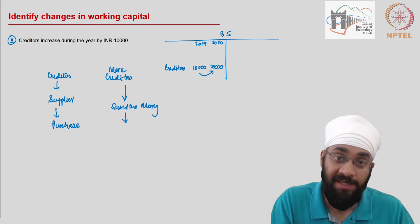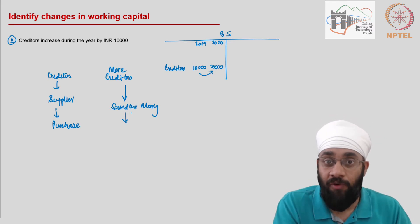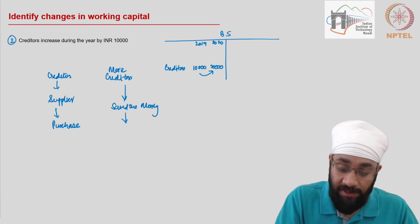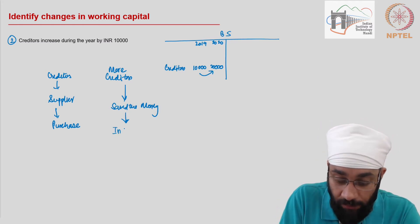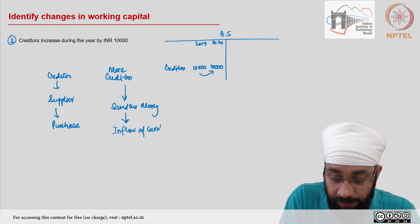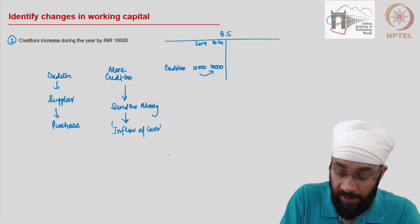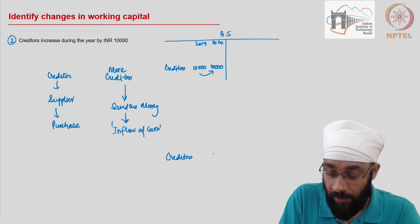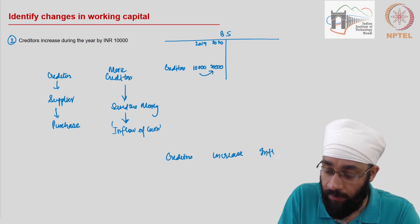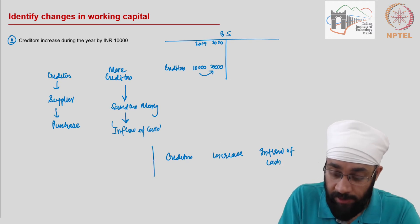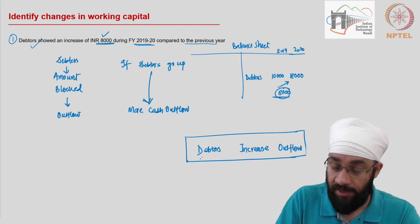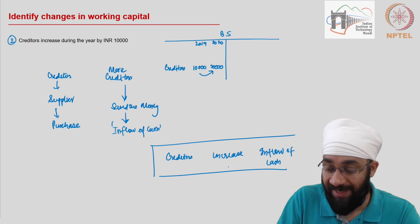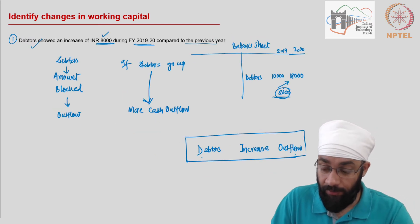You can think of it as: you saved the money and didn't need to pay the creditor, which means this is an inflow of cash. The conclusion is that when creditors increase, it results in an inflow of cash. Comparing this to the previous example: an increase in debtors (current asset) is an outflow, while an increase in creditors (current liability) is an inflow — two different things.